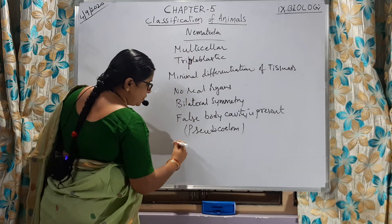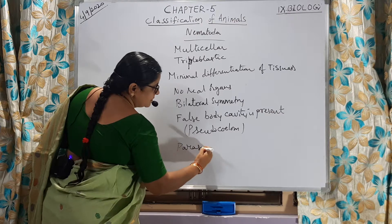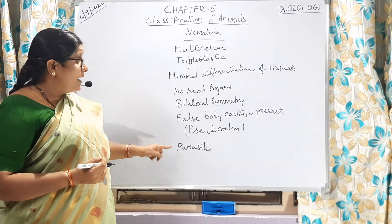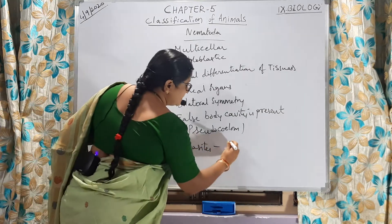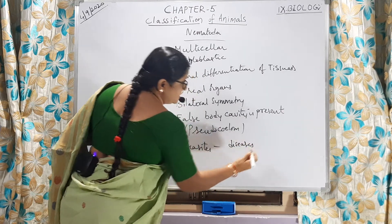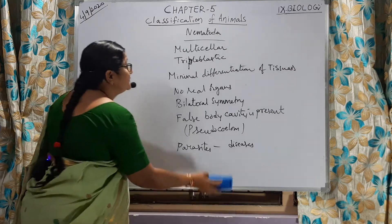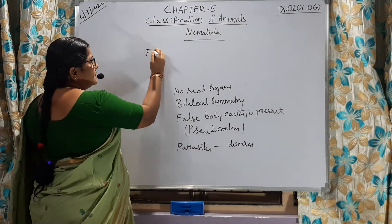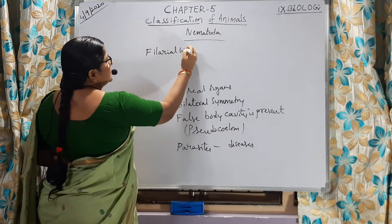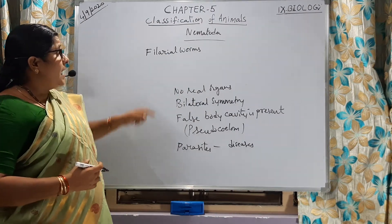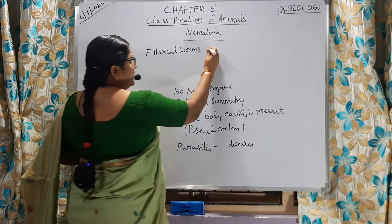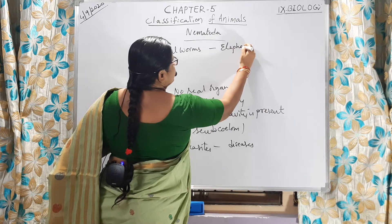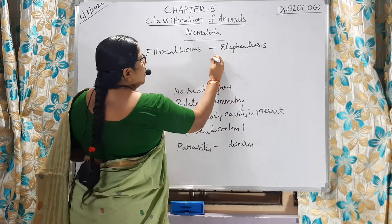Most of these nematodes live as parasites. A parasite is an organism which lives in the body of another organism. All these nematodes cause diseases — they live as parasites and are responsible for diseases. For example, filarial worms live as parasites in our body, and they are responsible for a disease called elephantiasis or filariasis.